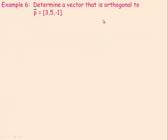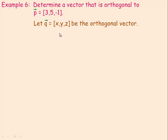In example 6, we're asked to determine a vector that is orthogonal — which is another name for perpendicular; the word normal is also used. Orthogonal, normal, perpendicular all mean the same thing. We want a vector perpendicular to (3, 5, −1). Let the other vector q have components (x, y, z). If two vectors are orthogonal, then their dot product is 0. So: 3x + 5y + (−1)z = 0, which gives 3x + 5y − z = 0.